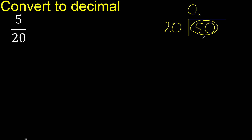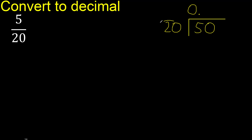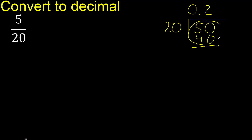50 is not less than 20, so we work with 50. What number multiplied by 20 is nearest to 50? 20 multiplied by 3 is 60 — excessive. So 20 multiplied by 2 is 40. Subtract: 50 minus 40 is 10.